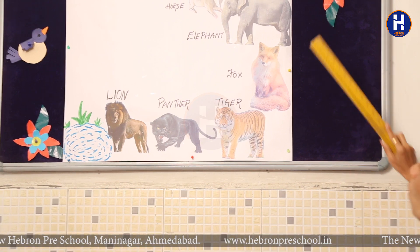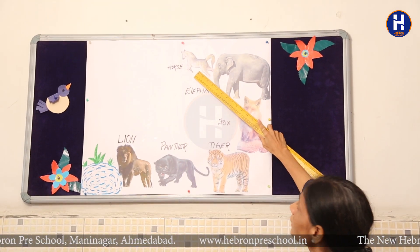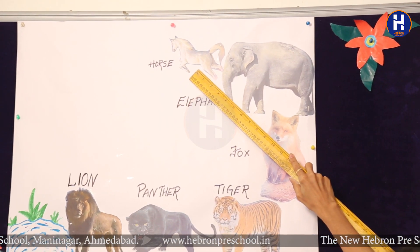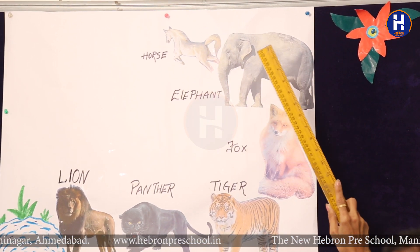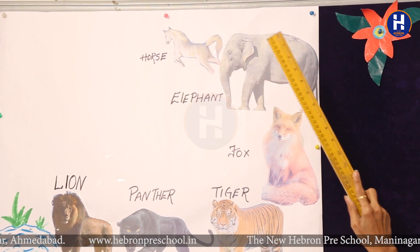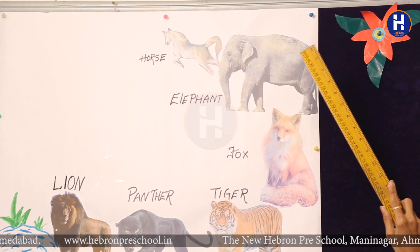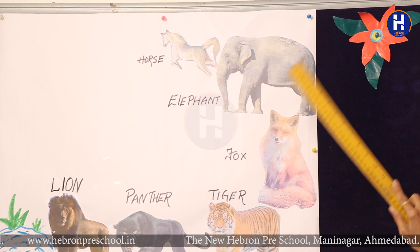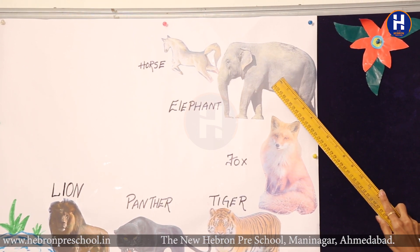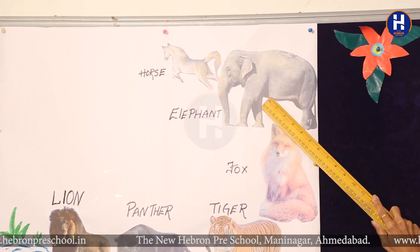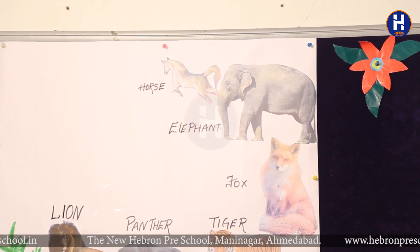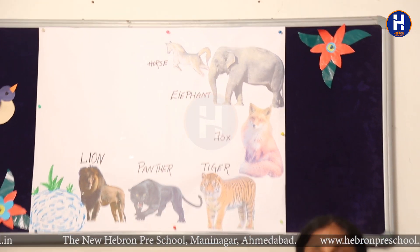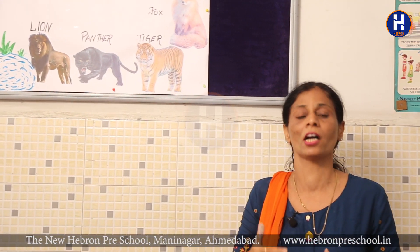Now which animal is this? Yes, horse. Which animal is standing before horse? Horse ke pehle konsa animal khada hai? Which animal is this before horse? Yes, elephant! Very good, children. Aapko samajh mein aaya — jo kisi ke bhi pehle hota hai, use 'before' kehte hain, usse aage ka kehte hain.